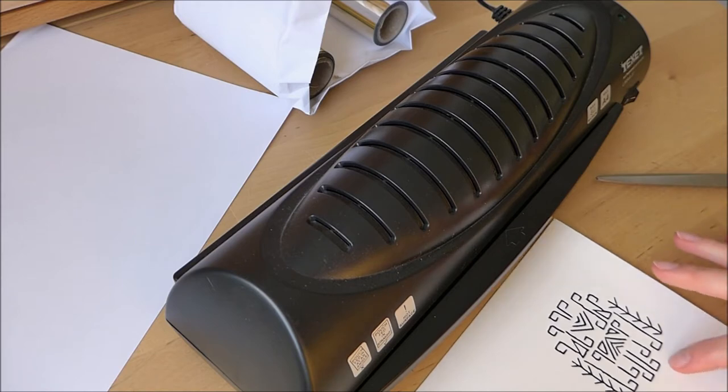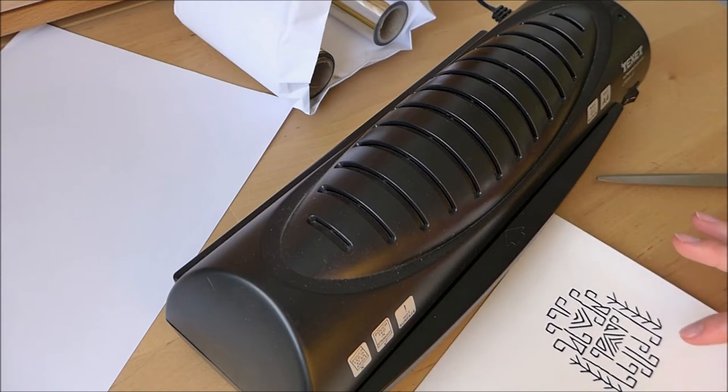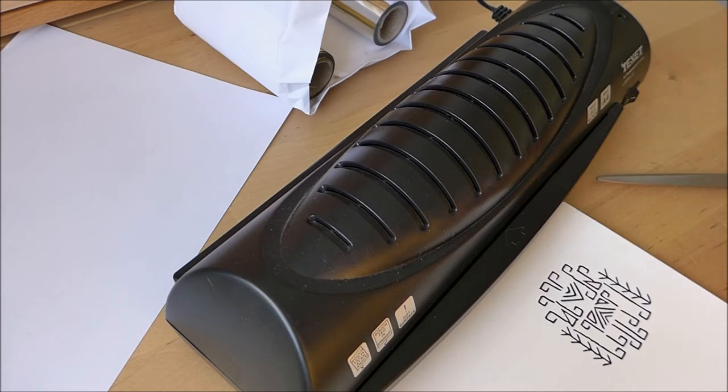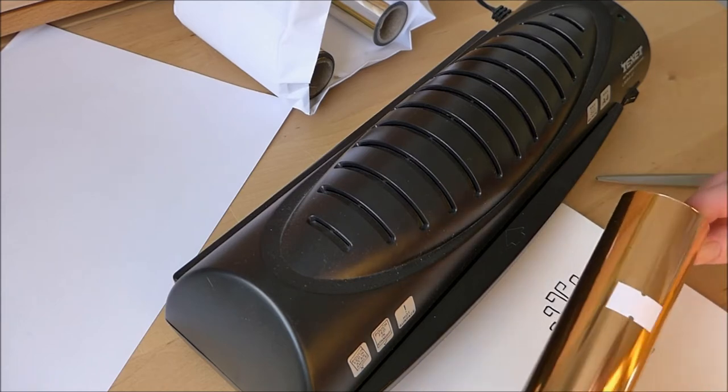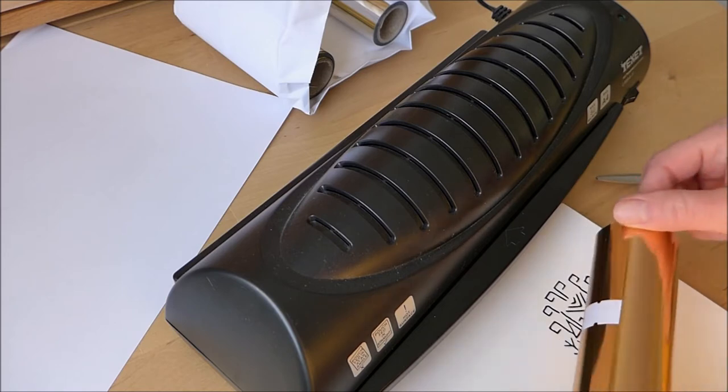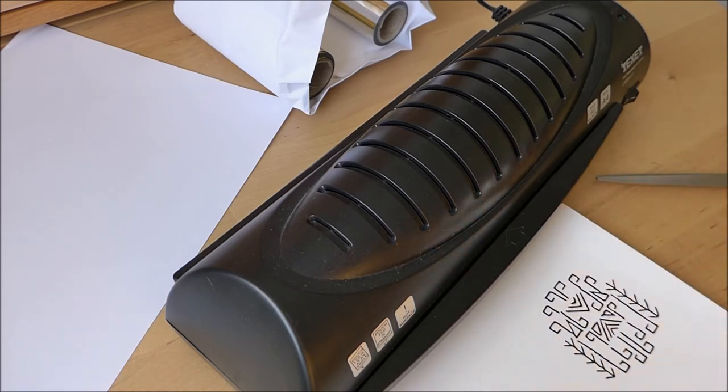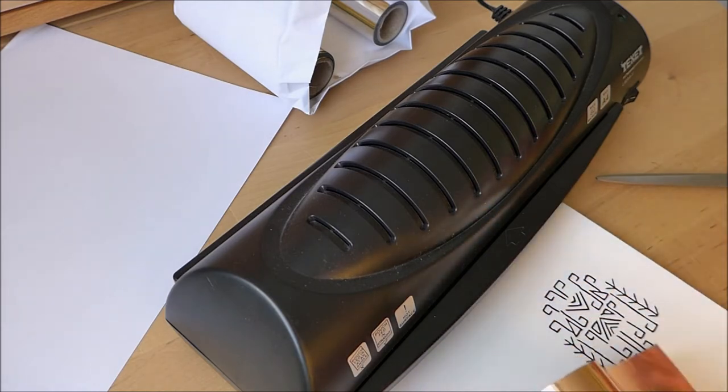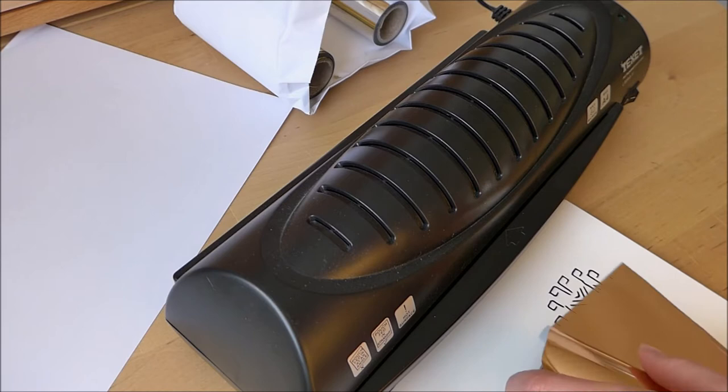Now apparently it's the laser ink that the foil will stick to, so I've printed this on my laser printer. It's just one of my simple tribal doodles that I did in a recent video when I was doodling for some pattern design, and I thought I would try this kind of rose gold coppery foil on it. So first of all I need to cut a piece of foil to cover the motif.